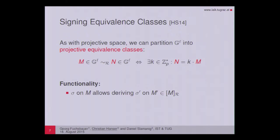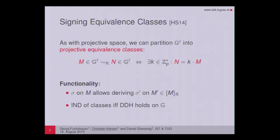What does it mean to sign equivalence classes? Given a prime order group G and G to the L, we can define projective equivalence classes on G to the L, which are lines through zero not containing the zero vector itself. In other words, two elements M and N fall into the same class if one is a scalar multiple of the other. If the DDH assumption holds on the underlying group, we get some sort of indistinguishability notion defined on the classes for free.